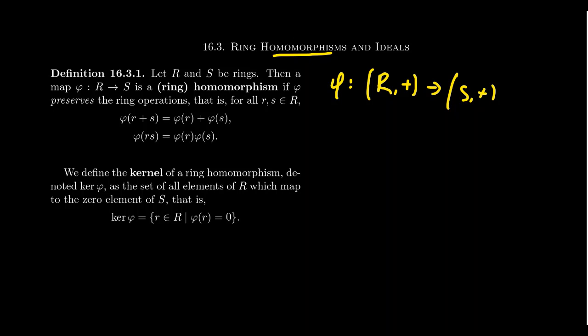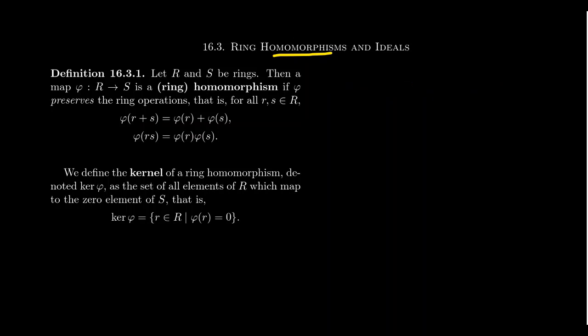If I take any two elements of R, call them little r and little s, and take phi of r plus s, we want this to be a group homomorphism so that phi of r plus s will be the same thing as phi of r plus phi of s. We want the homomorphic property with respect to the addition of the rings. Therefore, a ring homomorphism is going to be a group homomorphism with respect to the abelian group structure of addition — that is, if we forget the multiplication, we want it to be a group homomorphism on addition.